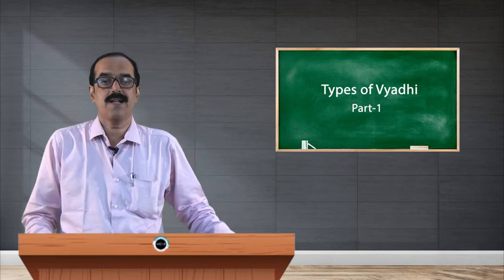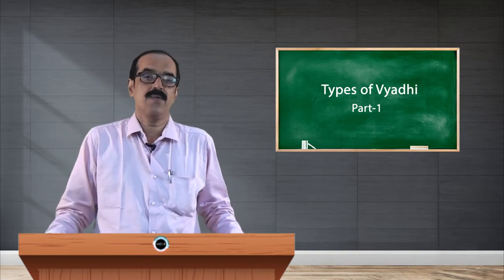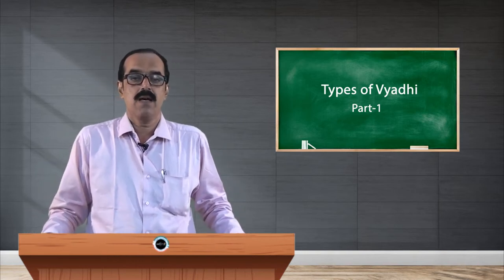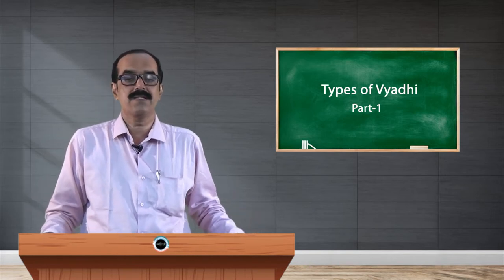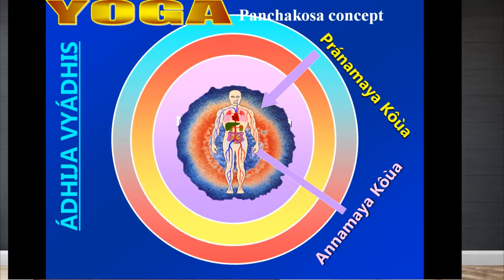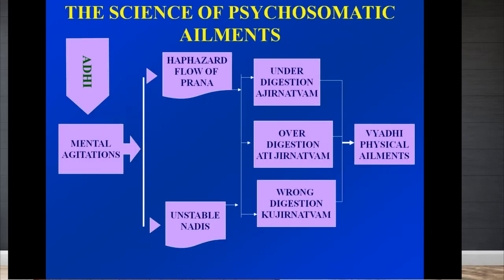The pancha kosha theory, clearly stated from the Taitreya Upanishad, explains that our entire personality is divided into five levels. As you can see in the slide: annamaya kosha (physical level), pranamaya kosha (sheath of prana), manomaya kosha (sheath of mind), vijnanamaya kosha (sheath of intellect), and anandamaya kosha (sheath of bliss).